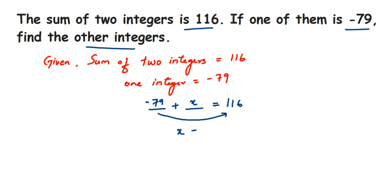We are going to transpose -79 to the other side. So x will be equal to 116, minus will become plus, so plus 79. So we have to just add these two numbers and whatever answer we got, that is the value of x. So x will be equal to 195.